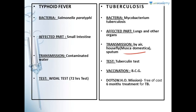The test for tuberculosis is the tuberculin test. The vaccination is BCG — Bacillus Calmette and Guérin. DOTS is a mission by WHO. It is a free-of-cost six-month treatment for tuberculosis.